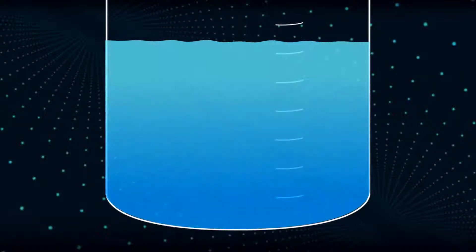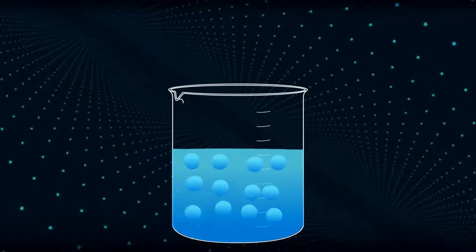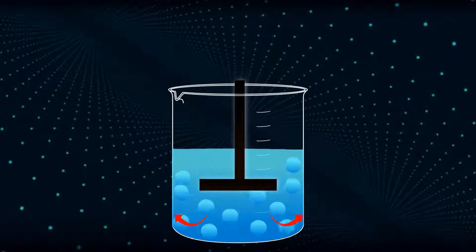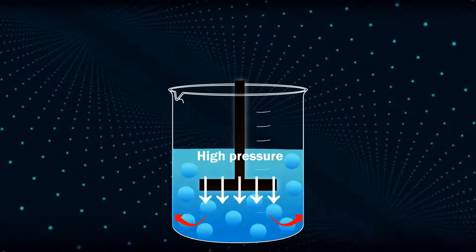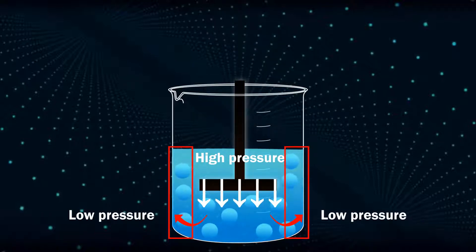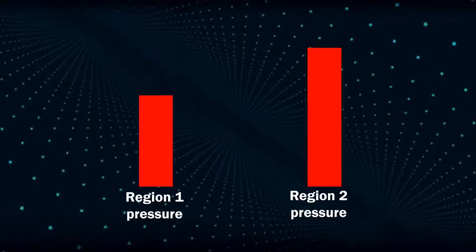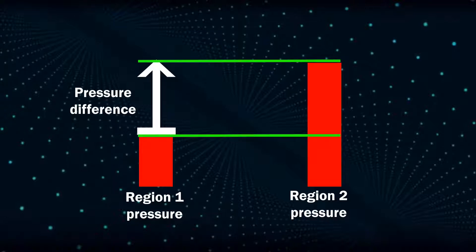Since liquid particles are loosely attracted, they react to pressure easily. On applying force, they move from a high pressure to a low pressure region. This property of liquids makes them useful in measuring the pressure difference between two regions.